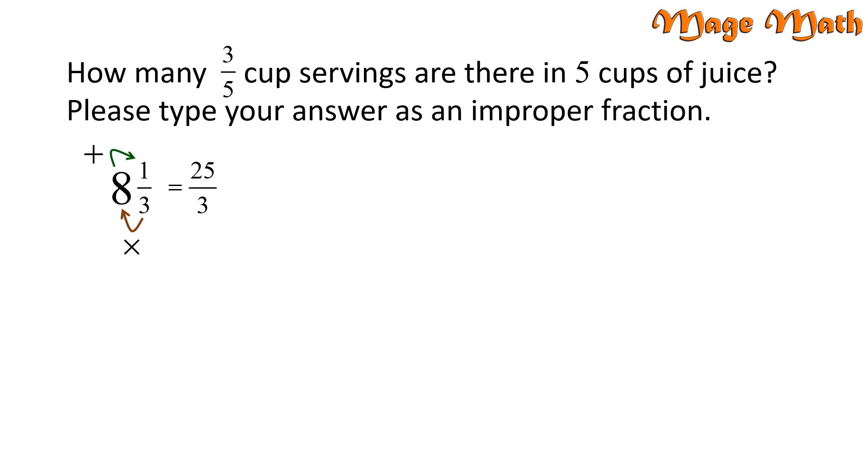Let's check our work using arithmetic. The problem asks to divide 5 by 3 fifths. The rule of thumb is to multiply by the reciprocal of the second fraction. So we rewrite the problem as 5 times 5 thirds. And we can write 5 as 5 over 1.